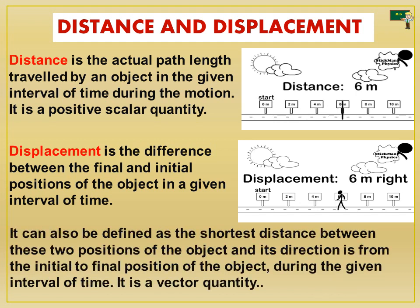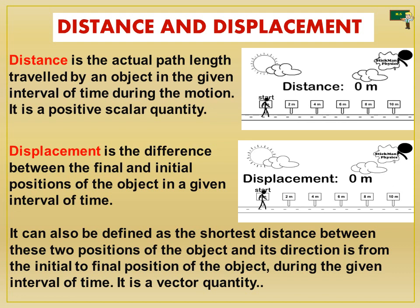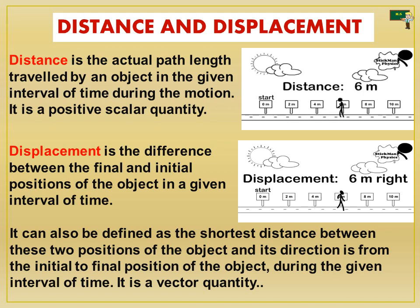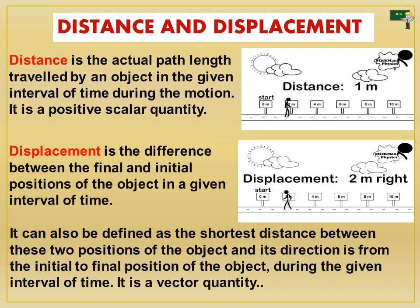Displacement can also be defined as the shortest distance between two positions of the object, and its direction is from the initial to the final position. In displacement, the initial position, final position, and the time interval are all very important, because we can see the direction of displacement. That is why displacement is a vector quantity.